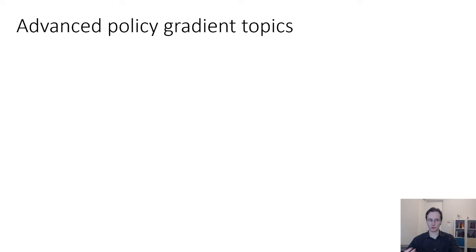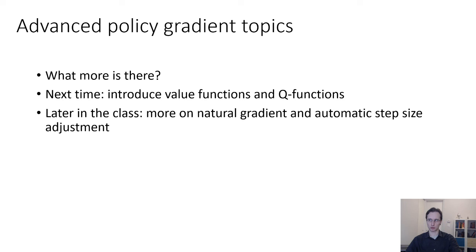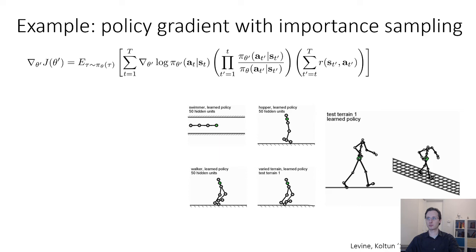Alright. A few notes on advanced policy gradient topics. What more is there? Well, next time we'll talk about actor-critic algorithms where we'll introduce value functions and Q functions and talk about how those can further decrease the variance of the policy gradient. And then later in the class, we'll talk more about natural gradient, automatic step size adjustment, and trust regions. For now, let me briefly go over some papers that actually use policy gradients in interesting ways.